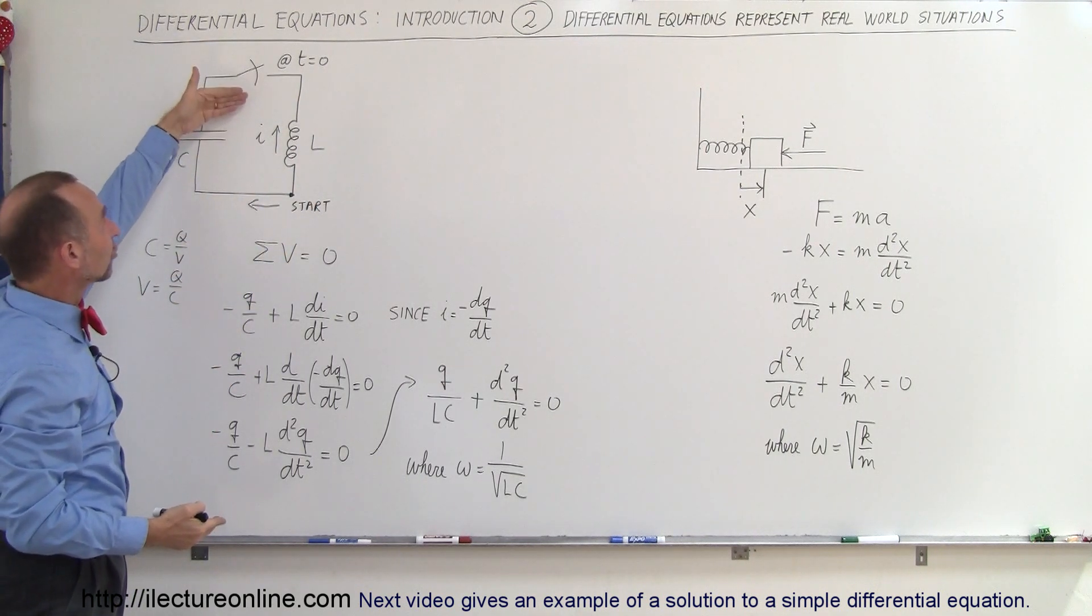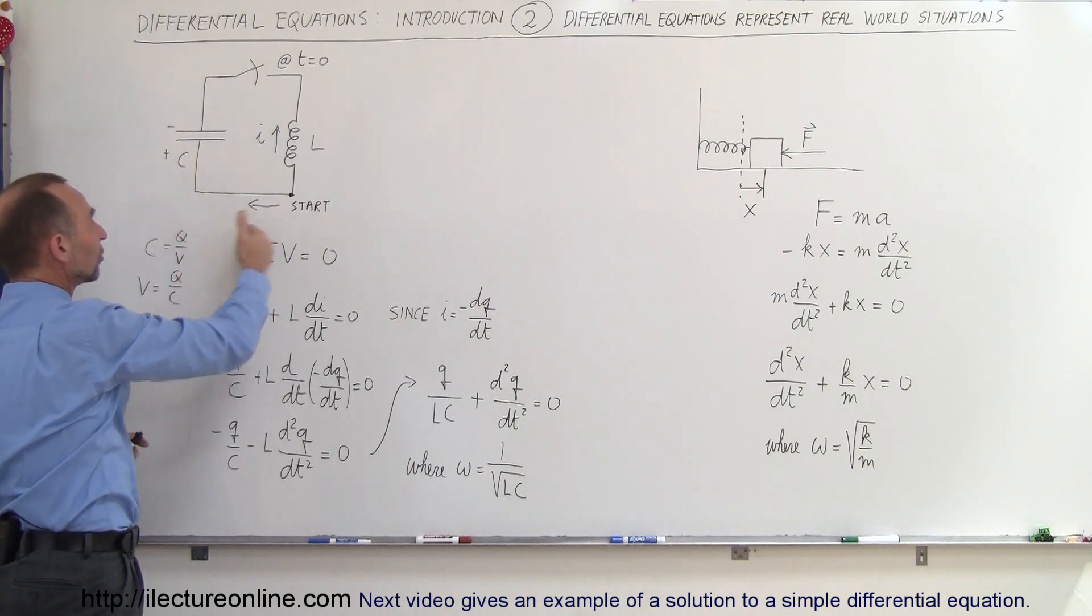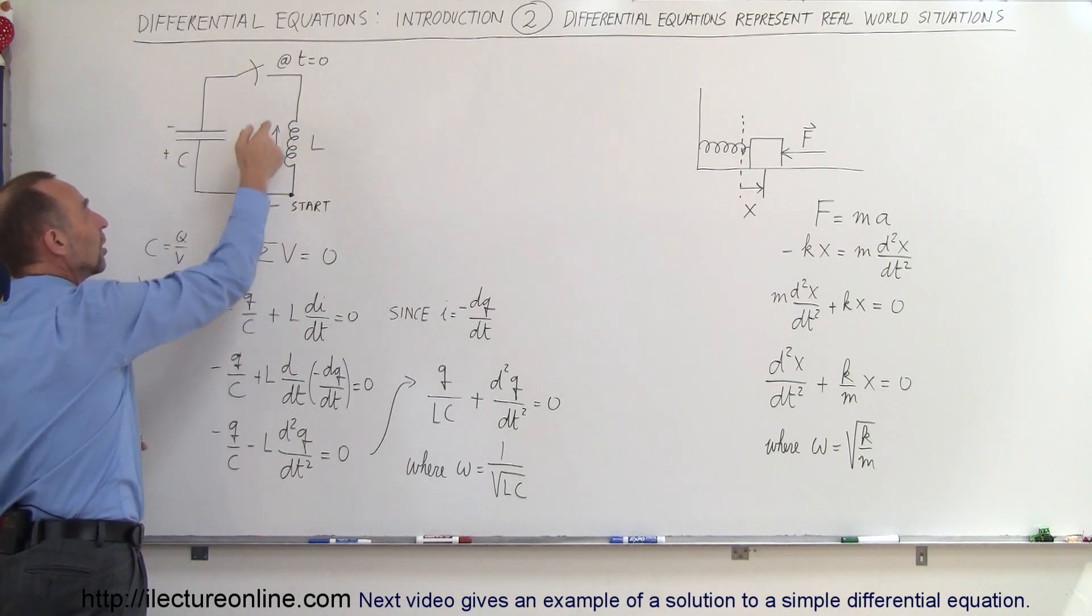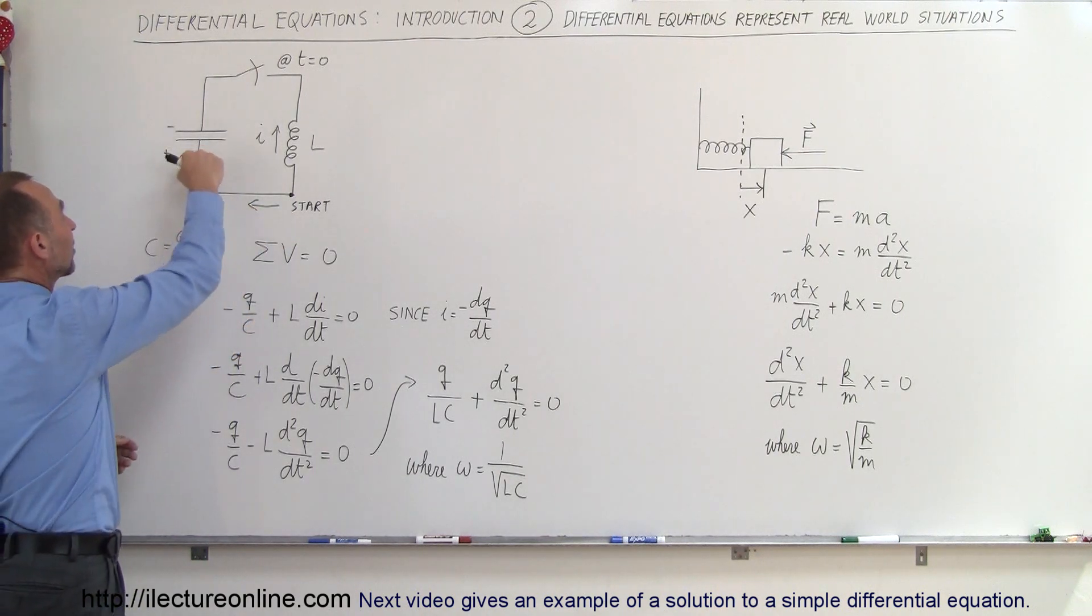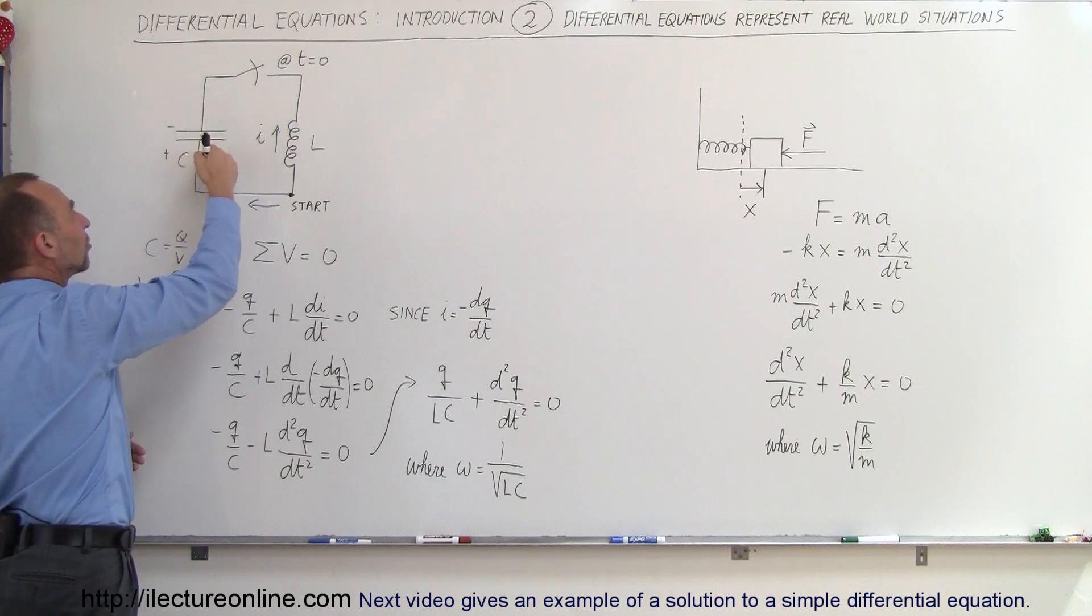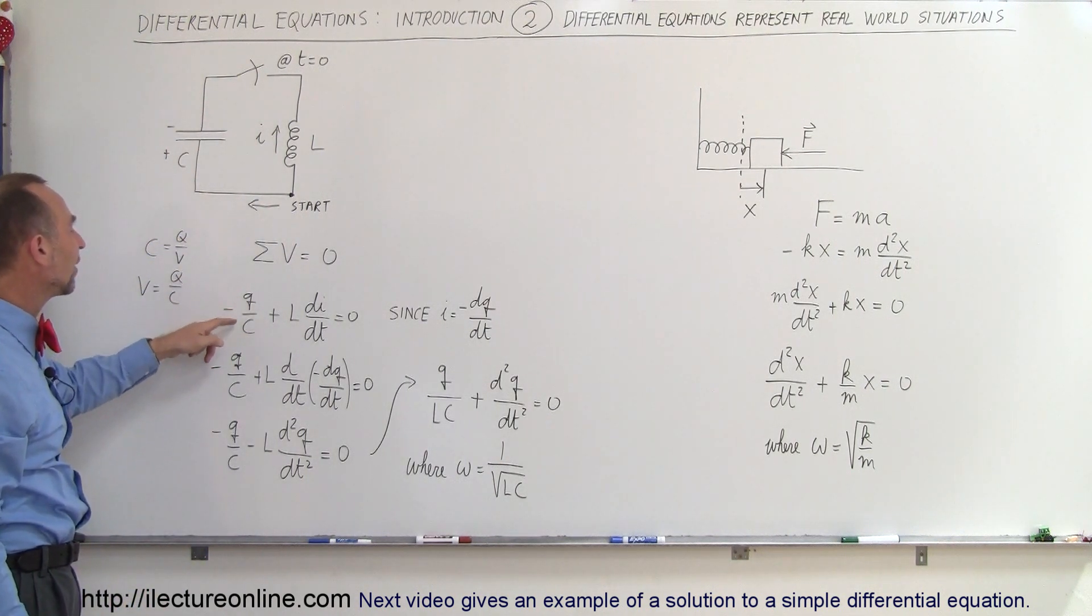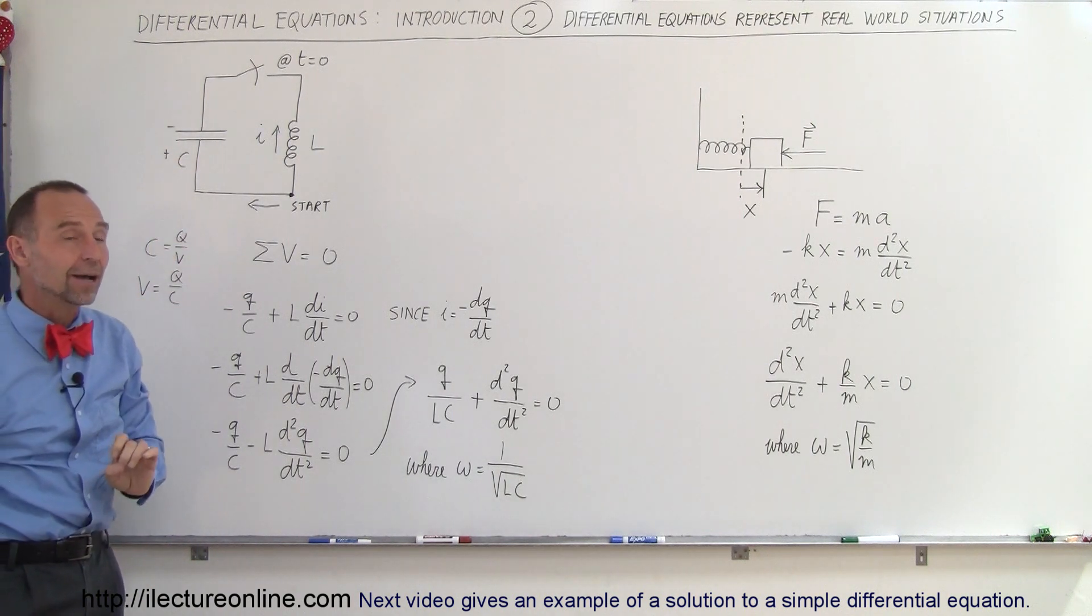Notice, once we close the circuit, the current will begin to flow from the positive end of the capacitor to the negative end of the capacitor through the inductor in that direction. So when we add up all the voltages, we come across here, we notice that this is the positive end and the negative end of the capacitor, so that's a voltage drop. So we have minus Q divided by C, which is the voltage across the capacitor at any point in time.